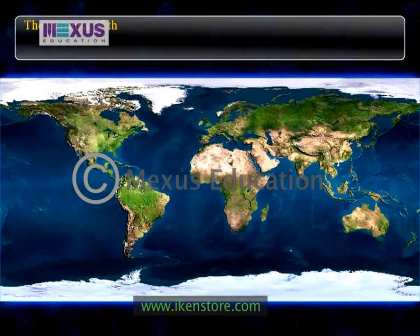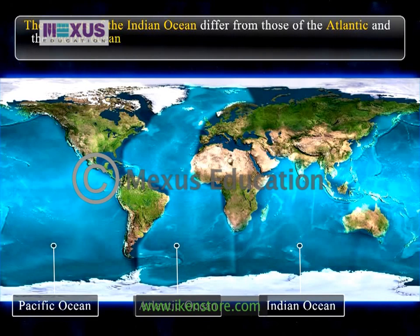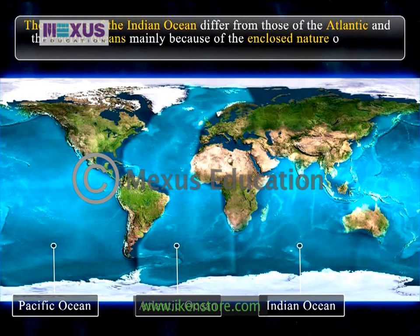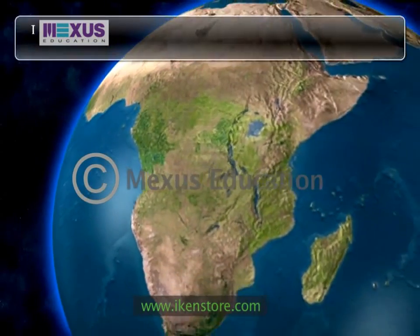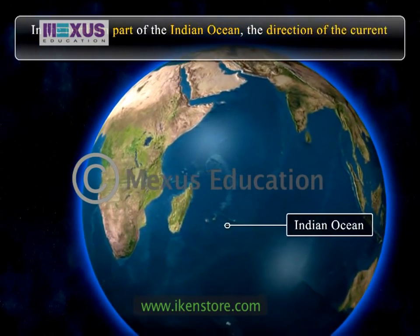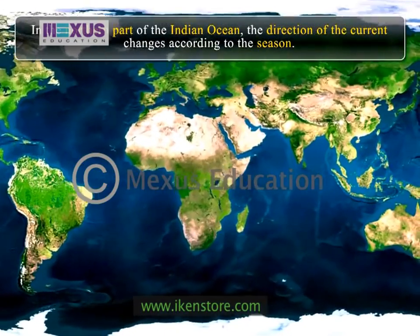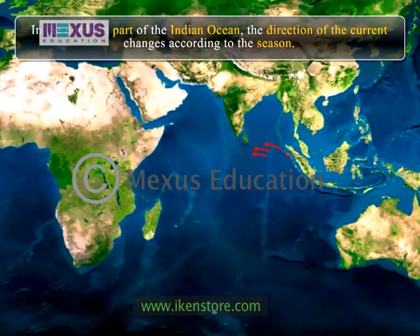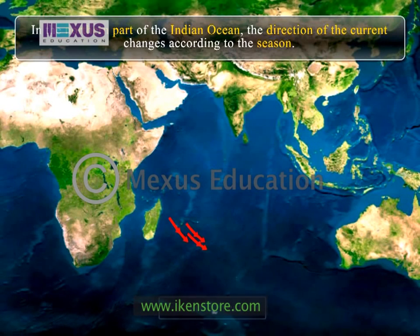The currents of the Indian Ocean differ from those of the Atlantic and the Pacific mainly because of the enclosed nature of the sea and the influence of the monsoon winds. In the northern part of the Indian Ocean, the direction of the current changes according to the season. In summer, when the southwest monsoon blows, the current flows in the western direction, and in winter, when the northeast monsoon winds blow, the current flows in the eastern direction.